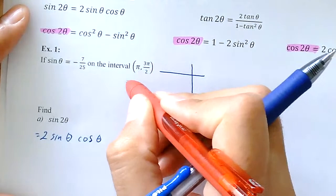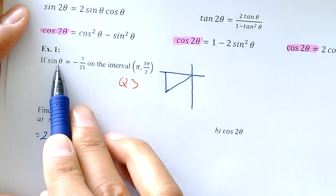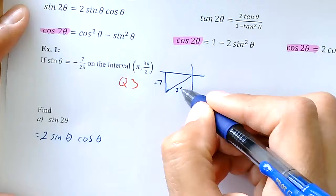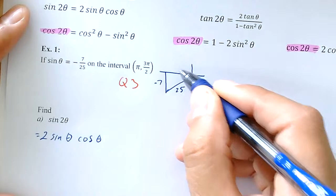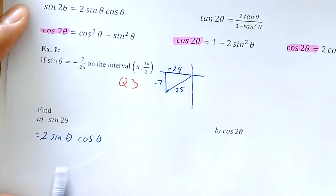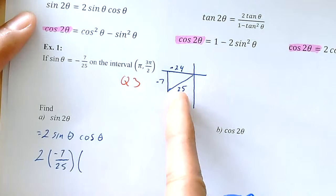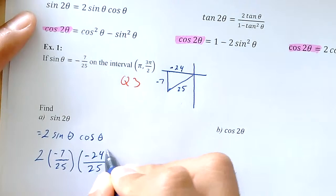That interval is from pi to 3 pi over 2, which is quadrant 3. So I can draw the information given in quadrant 3. I know that sine equals opposite over hypotenuse, so that gives us -7 over 25. Using the Pythagorean theorem, I can find the missing piece to be 24. Remember that in quadrant 3 this will be negative, so negative 24. The cosine of theta, using my triangle, is negative 24 over 25.